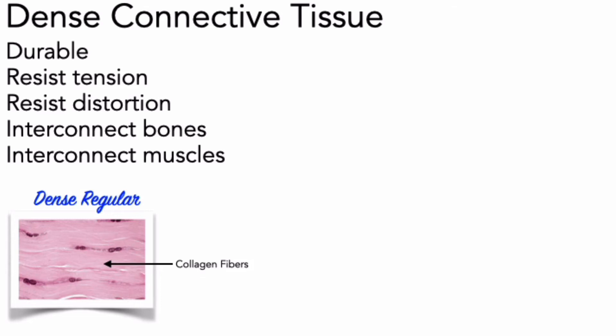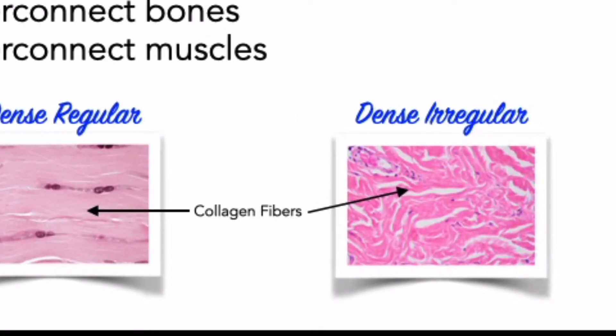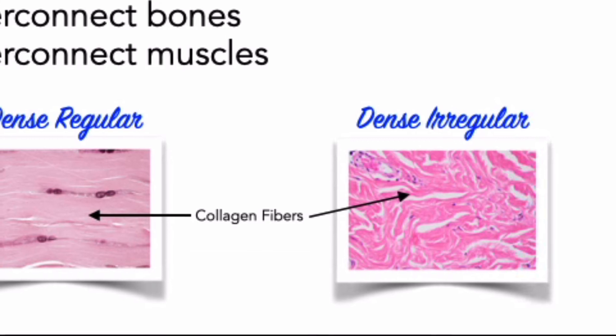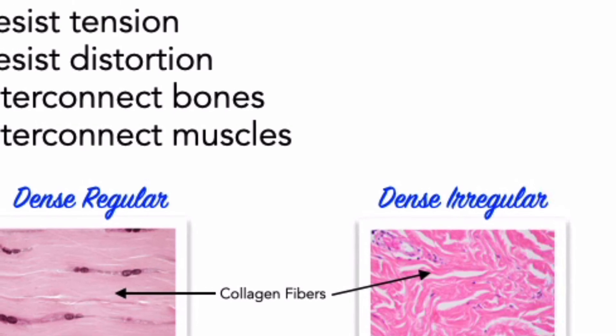In contrast, the fibers of dense irregular connective tissue form no consistent pattern. This tissue strengthens and supports areas subjected to stresses from many directions. Dense irregular connective tissue gives skin its strength and covers bone and cartilage except at joints. It also forms a thick, fibrous capsule which surrounds internal organs such as the liver, kidneys, and spleen, and encloses joint cavities.